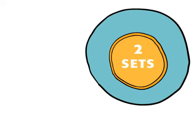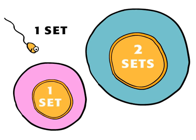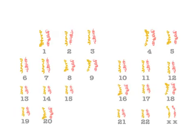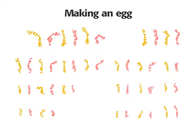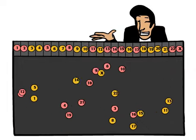Most adult cells contain two sets of chromosomes. But sperm and egg cells have only one set of 23 chromosomes each. When the body forms sperm or egg cells, a cell divides, and pairs of chromosomes separate. A random member of each pair moves into each new cell.